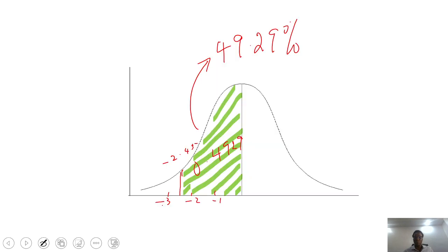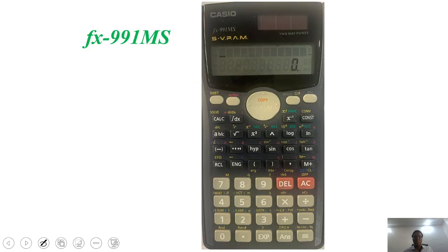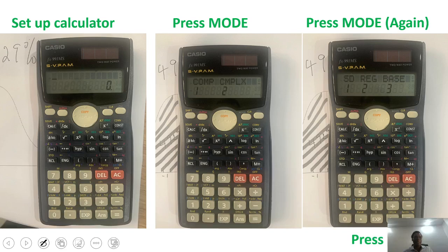If you use the FX-991MS calculator, it's easy to get that proportion. But first you need to set up that calculator. To set up the calculator, you need to press